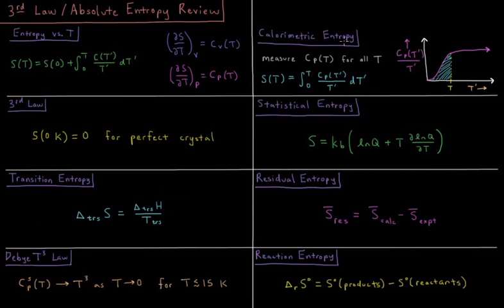We additionally have calorimetric entropy, which is one way we can measure the entropy experimentally. So we can measure the heat capacity of a system at any given temperature we like, and then we calculate the entropy by doing the integral from zero to that temperature of the heat capacity divided by the temperature.